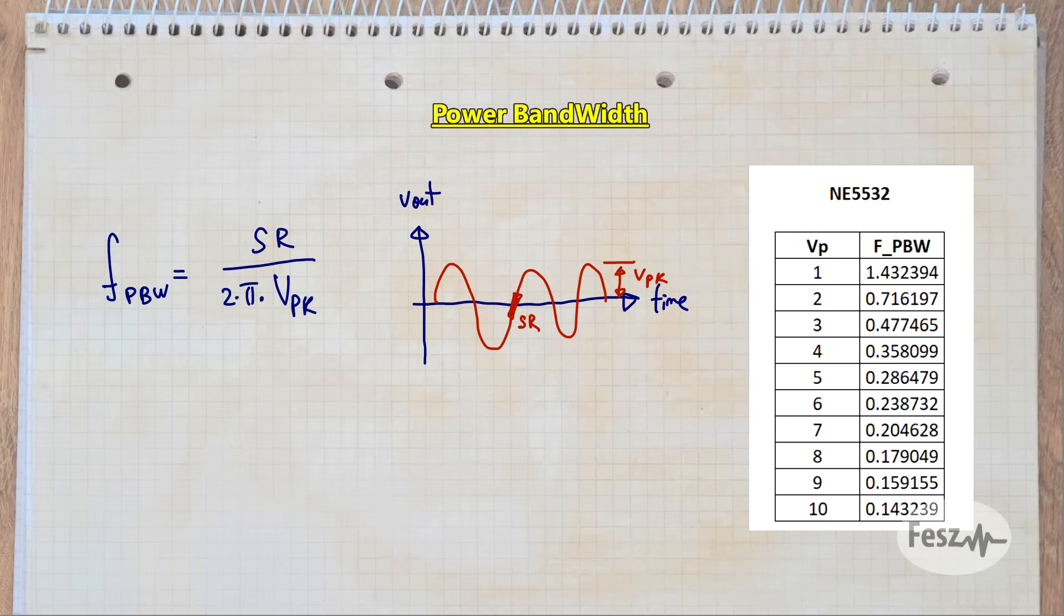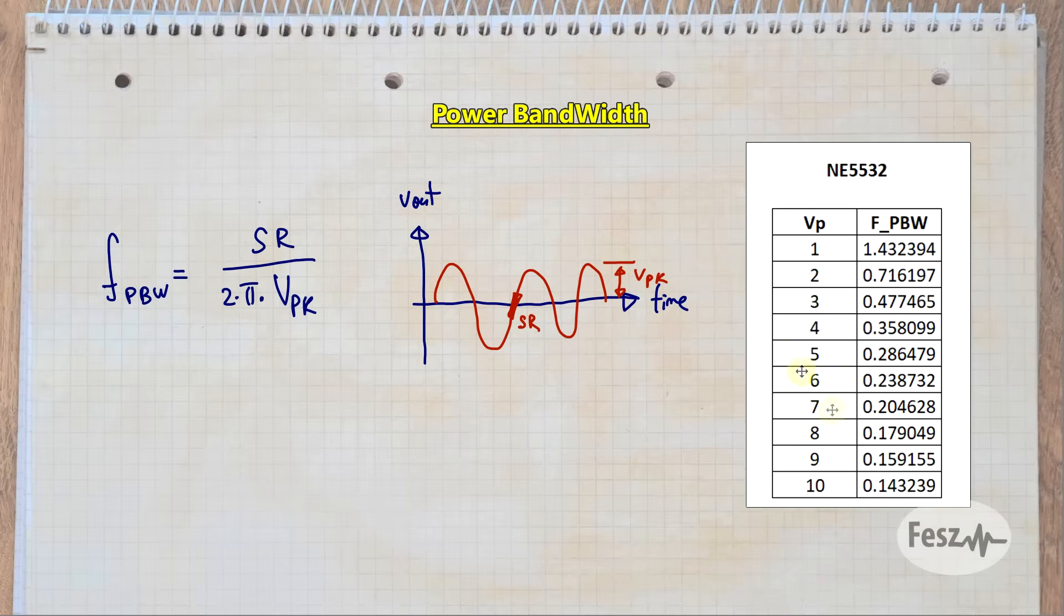Considering the slew rate of the 5532, I created a small table of frequencies and amplitudes. So for example, you can output a 500kHz signal without distortion, only if the peak voltage is smaller than 3 volts. Higher frequencies are of course limited to lower amplitudes.